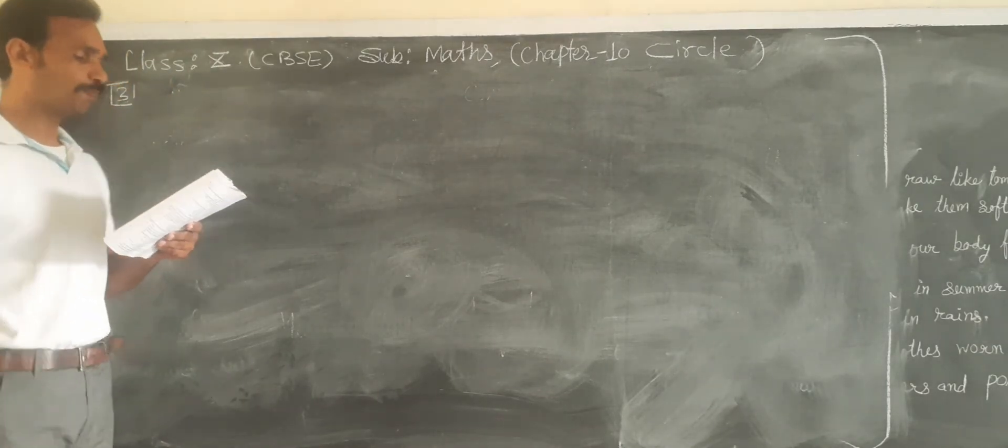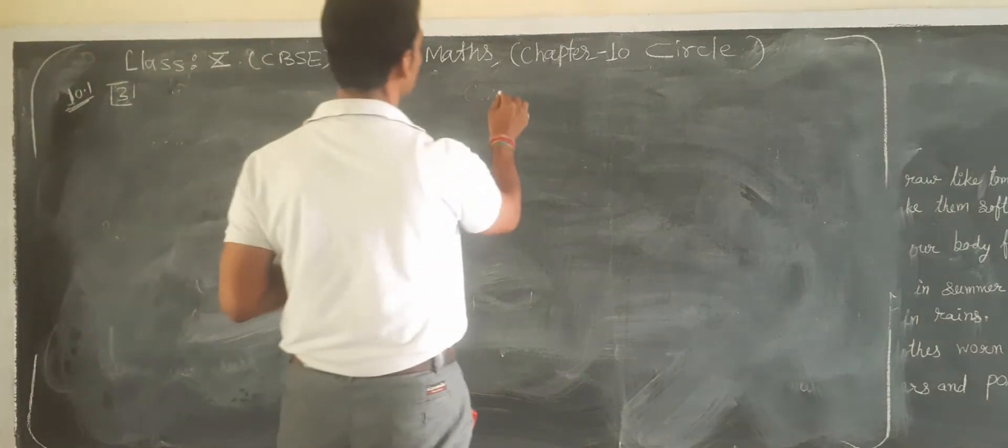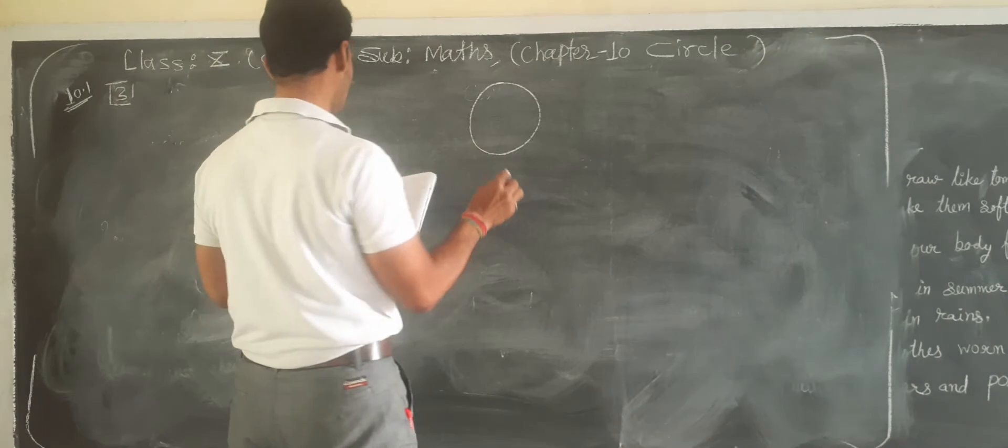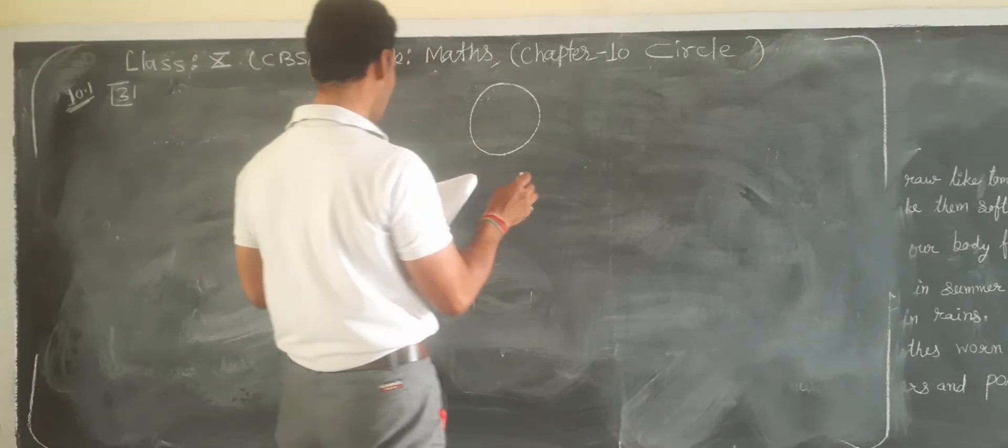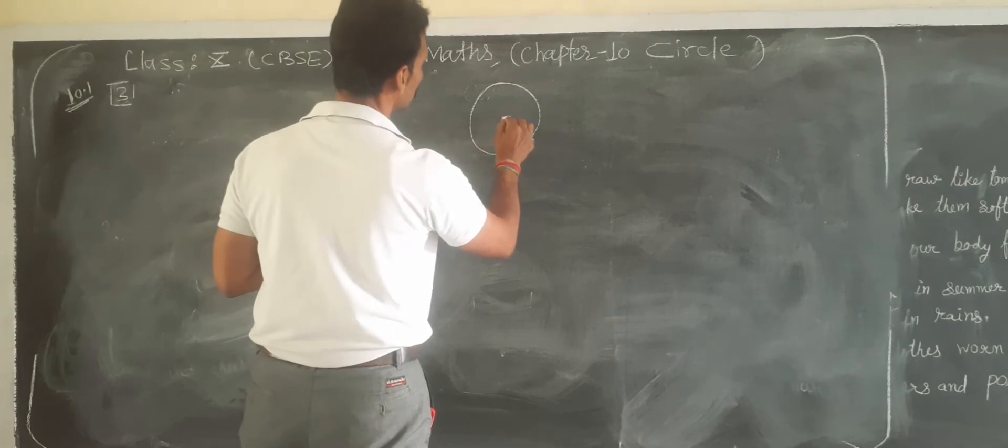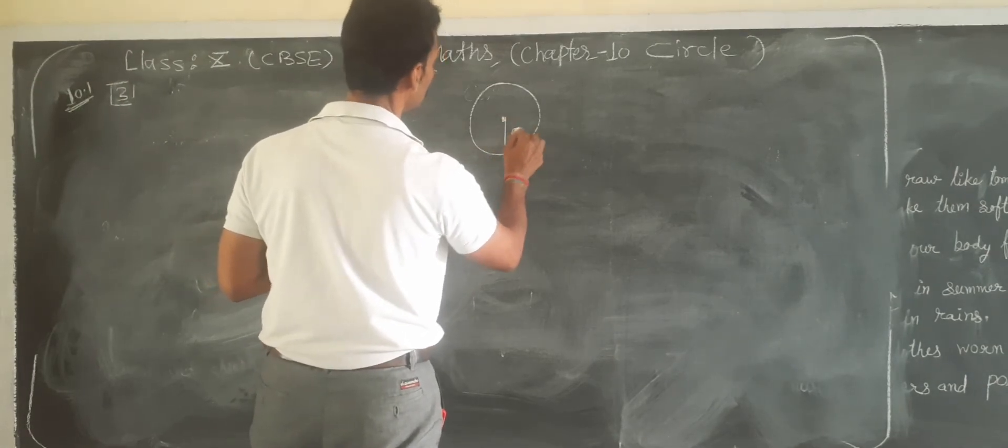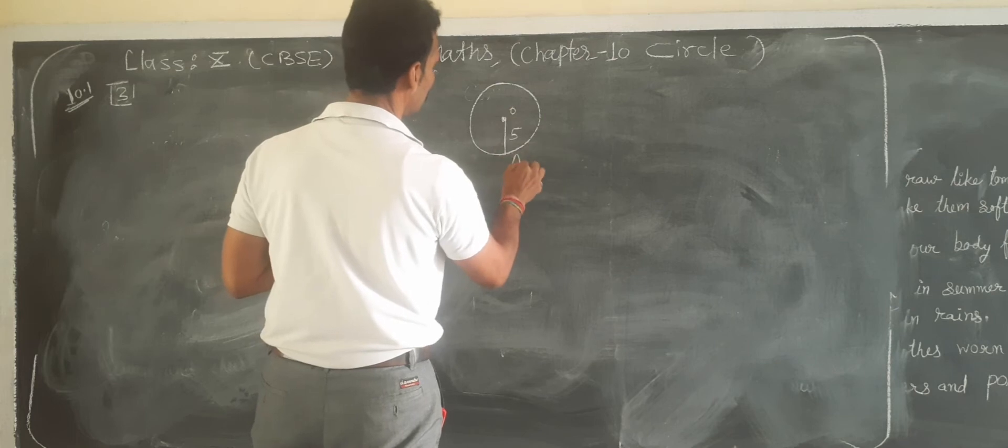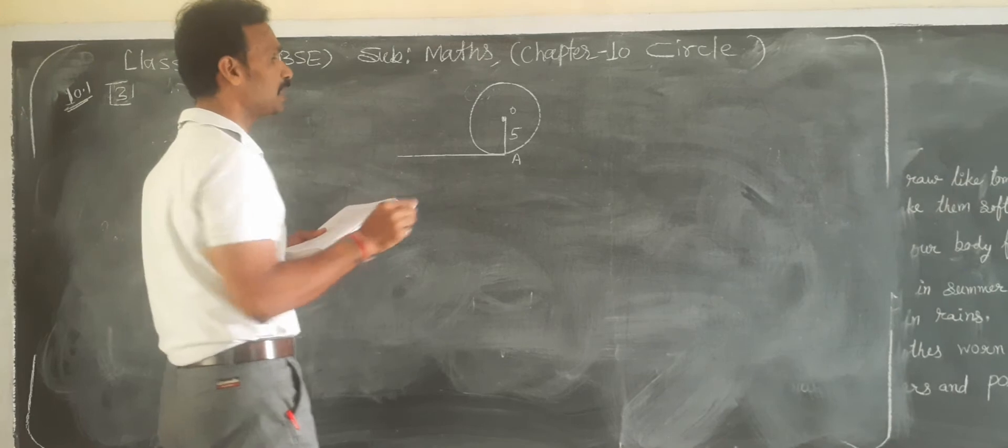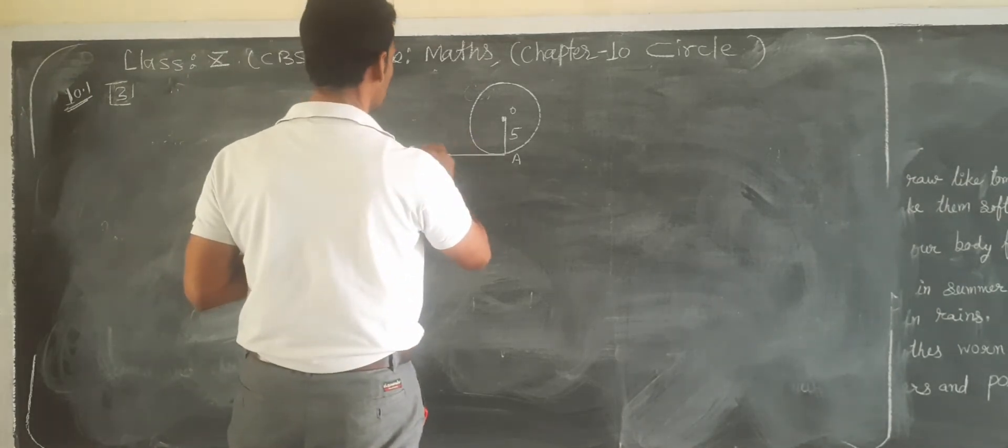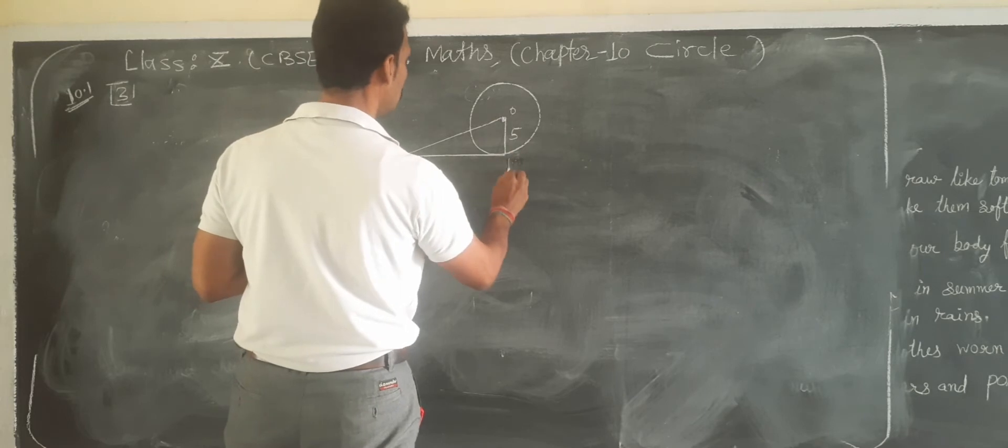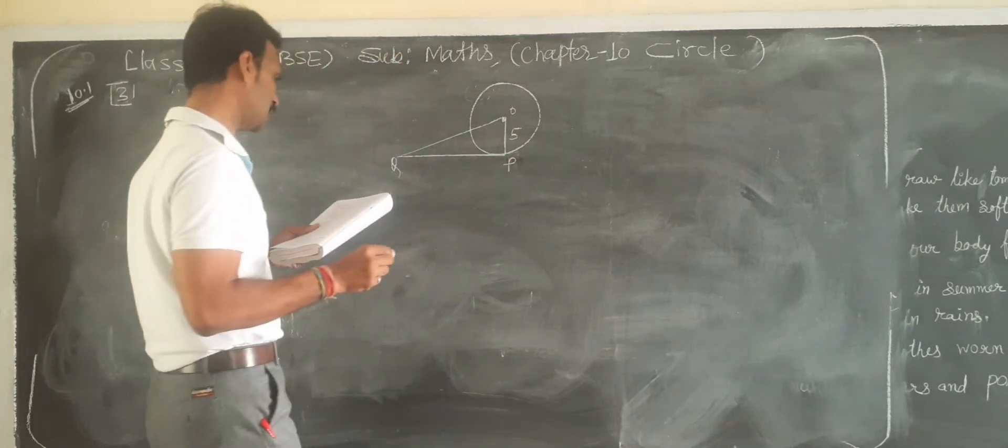A tangent PQ at the point P of a circle with radius 5 cm. This is radius 5 cm, and there is one tangent. Tangent PQ, so P and Q.